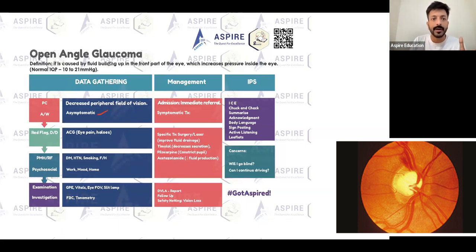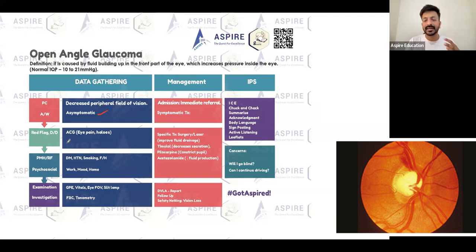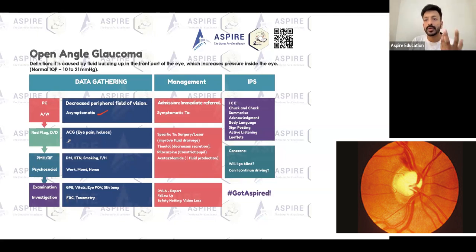You need to rule out angle closure glaucoma — if it is angle closure, the patient will have severe symptoms like eye pain, pain at the back of the eyes, color halos around lights, and red eyes. You can rule out other differentials: conjunctivitis, keratitis, uveitis. If there is decreased peripheral field of vision, ask about retinal detachment, or pituitary adenoma if bitemporal hemianopia is suspected.